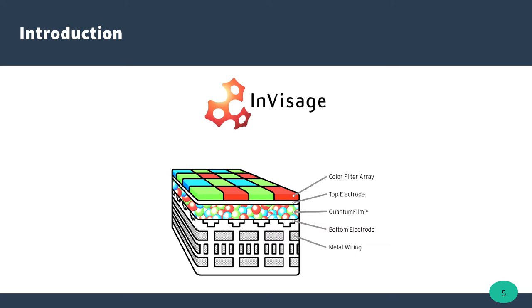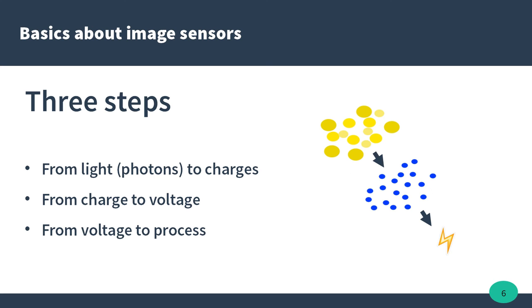Last year, the Californian company InVisage presented a proprietary type of material, the quantum film. Here is how it could help making better imaging being incorporated in CMOS. An image sensor works through three different stages.